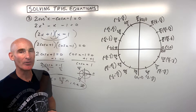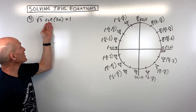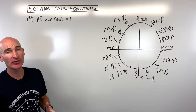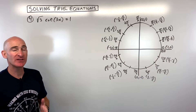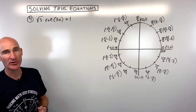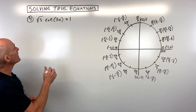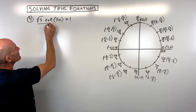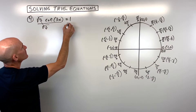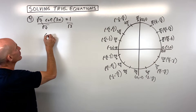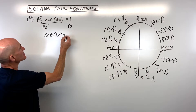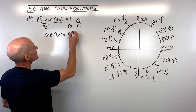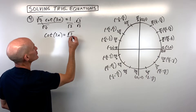For example number four, we have square root of three times cotangent of three x equals one — a multiple angle type. Isolate the cotangent by dividing both sides by square root of three, then rationalize to get cotangent of three x equals square root of three over three. Cotangent is x over y on the unit circle, and this value occurs at pi over three and four pi over three.